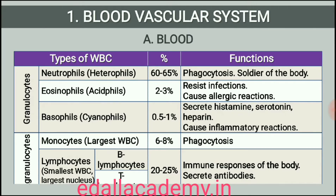Neutrophils are the most abundant cells, 60-65% of the total WBCs, and basophils are the least, 0.5-1%, among them. Neutrophils and monocytes, 6-8%, are phagocytic cells which destroy foreign organisms entering the body. Basophils secrete histamine, serotonin, heparin, etc. and are involved in inflammatory reactions. Eosinophils, 2-3%, resist infections and are also associated with allergic reactions.